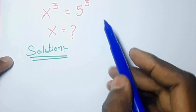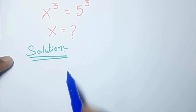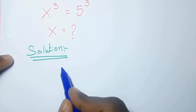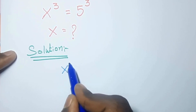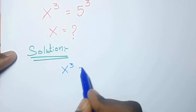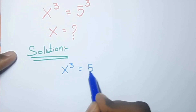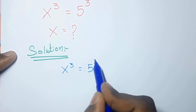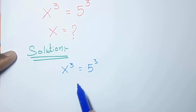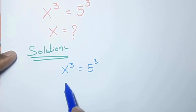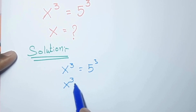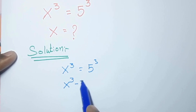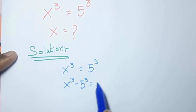Today we are going to solve this equation to find the x value: x to the power of 3 equal to 5 to the power of 3. This is the equation we are going to find the x value for. Now we are bringing one side: x to the power of 3 minus 5 to the power of 3 equal to 0.